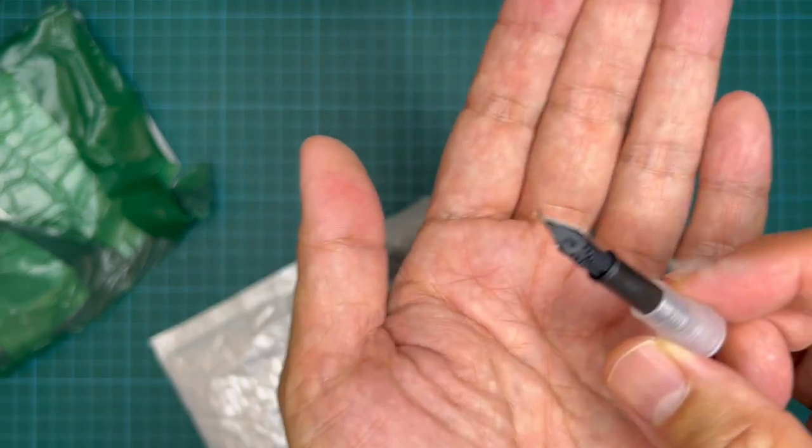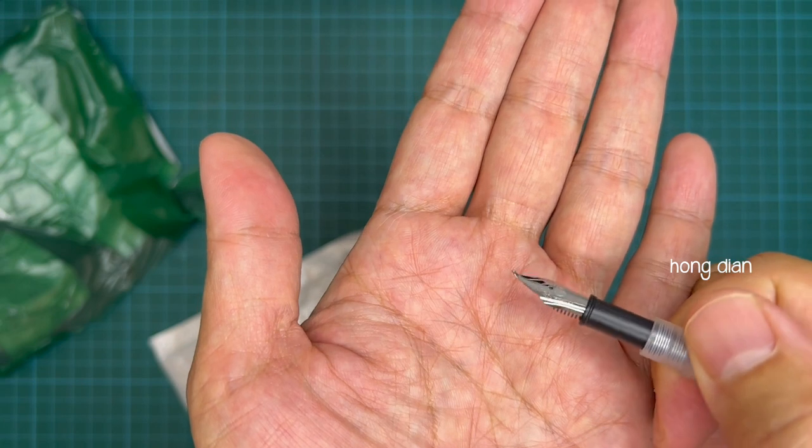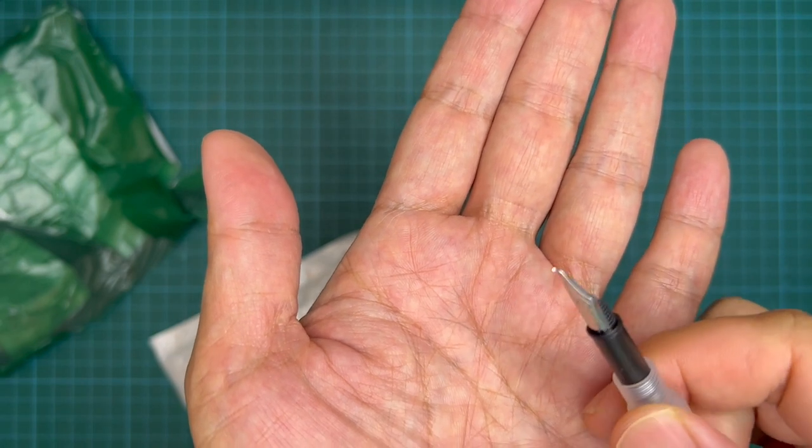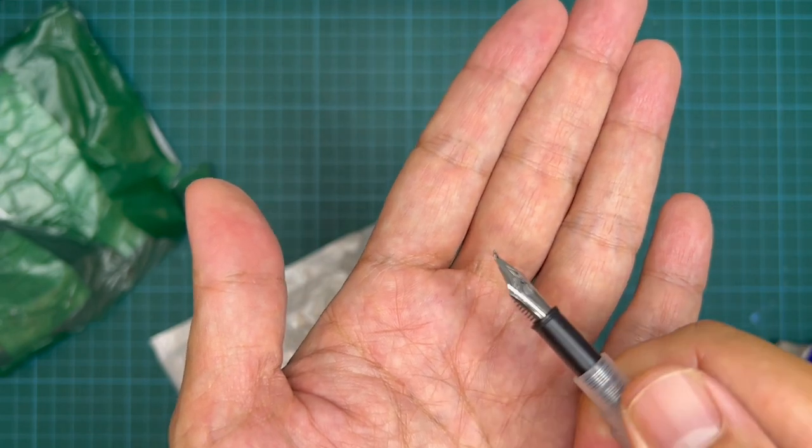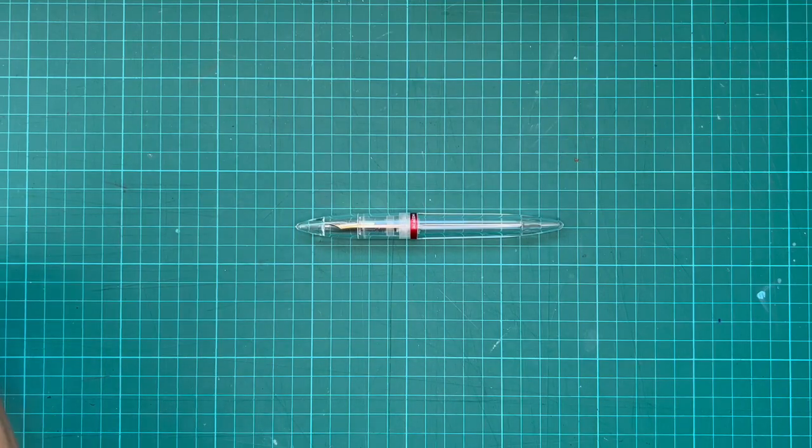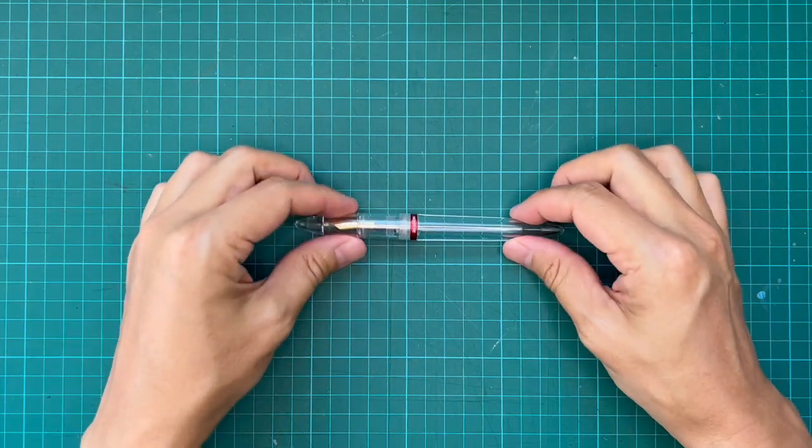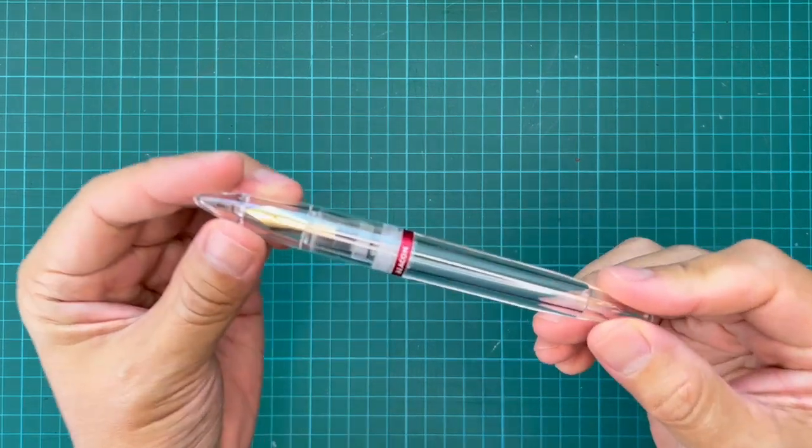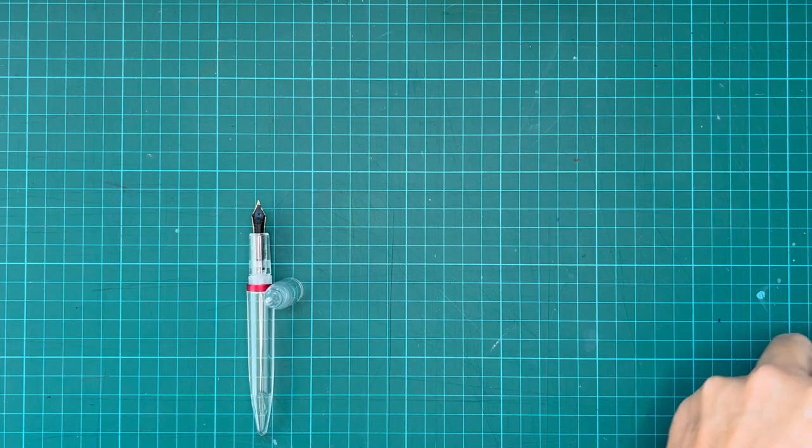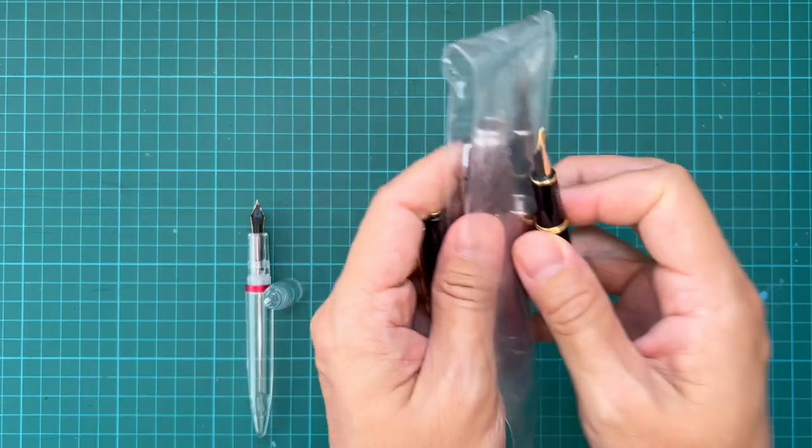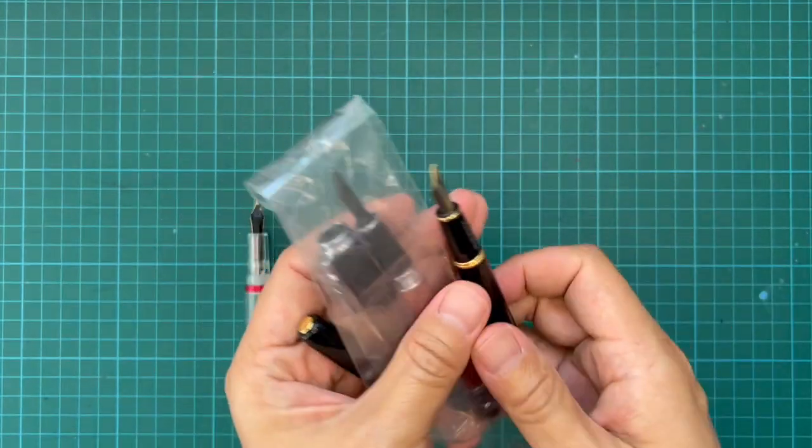These are fude nibs by Hongtian and I'm gonna use them as third parties on my Moonman M2 pens. All right, so I don't know why this Moonman pen here says Beacon, but this was what I just received. This was over many months of just trying out different pens and nibs.